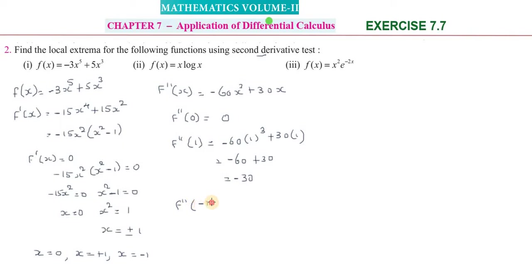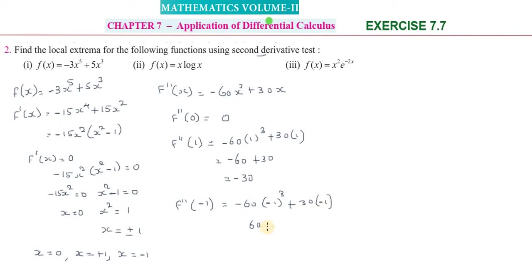Evaluating at x = 0: f''(0) = 0 — the test is inconclusive. Evaluating at x = +1: f''(1) = -60(1)³ + 30(1) = -60 + 30 = -30. Evaluating at x = -1: f''(-1) = -60(-1)³ + 30(-1) = 60 - 30 = 30.